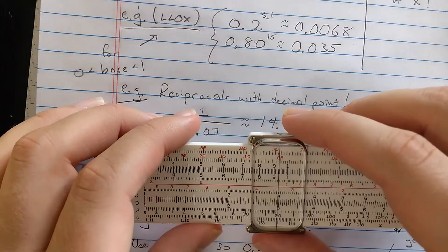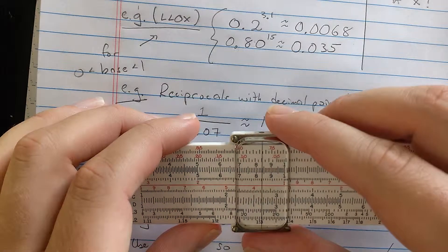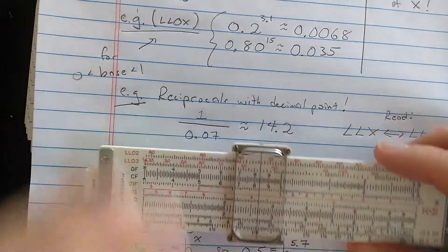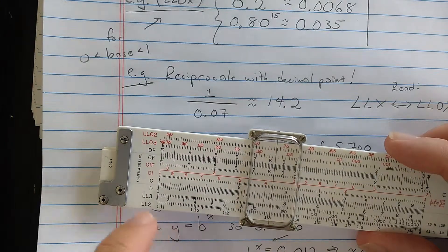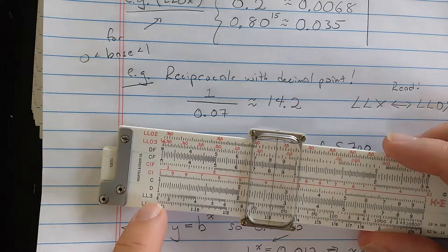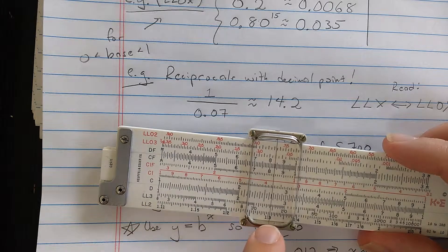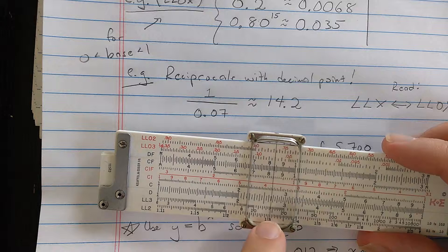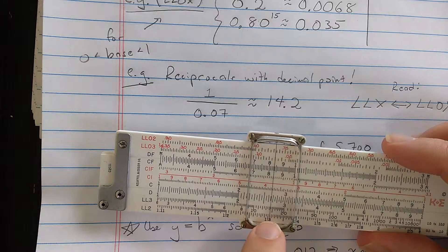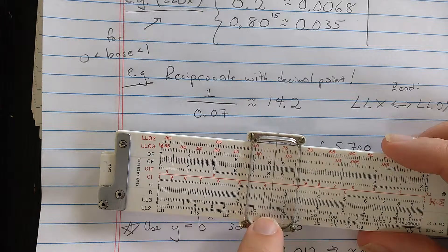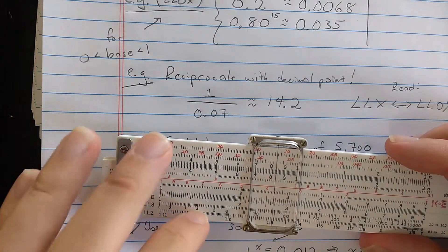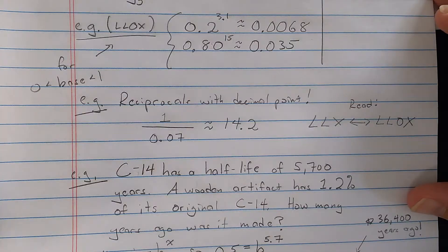You could find a number on one of the log-log scales, and then on the corresponding one, without the zero here, you read its reciprocal. So the number I found was on LL03, so a reciprocal should be reading on LL3, and it's 14.2. So it computes a reciprocal with a decimal point between these two scales.